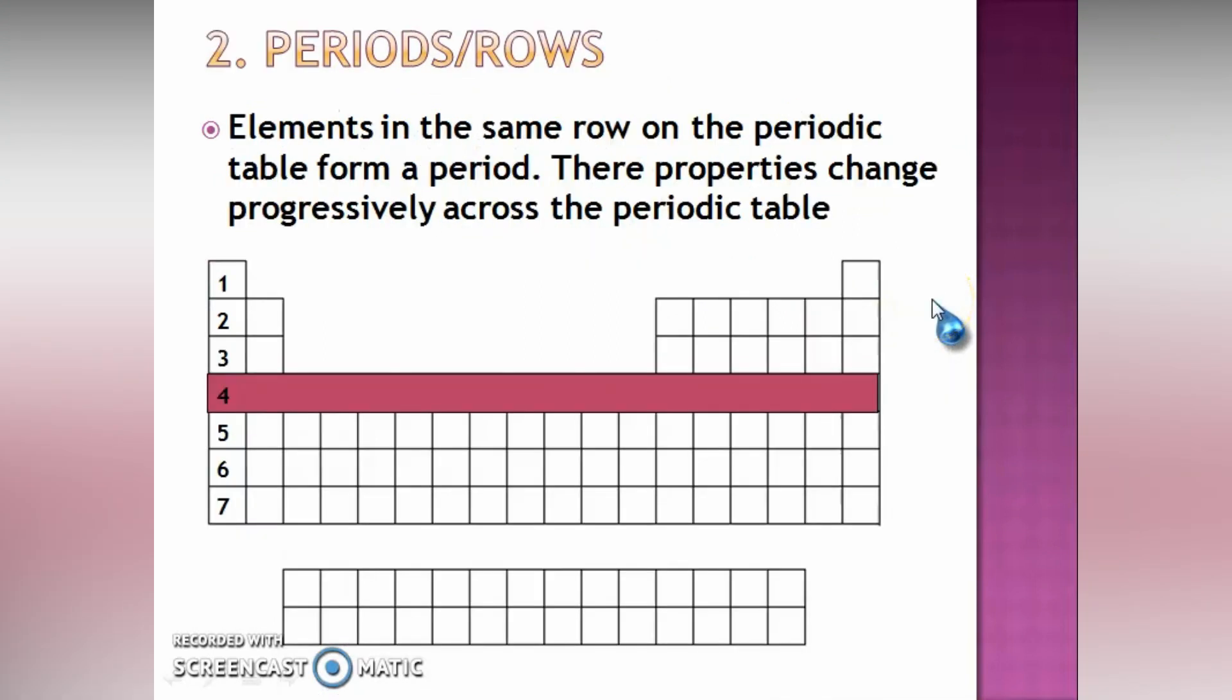Now, I'm going to the next term which is the period. Elements in the same row on the periodic table form a period. Now, if you look at this, a row on the periodic table which is called a period. The properties change progressively across the periodic table.